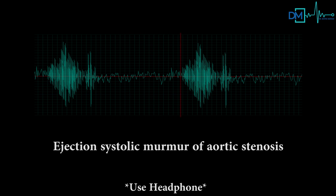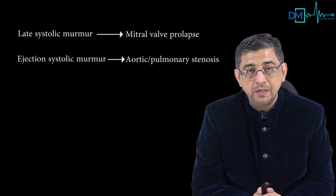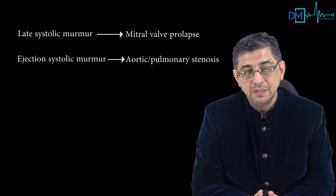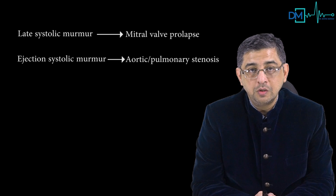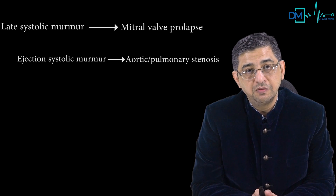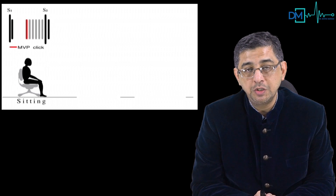Do not confuse the late systolic murmur of MVP with ejection systolic murmur, which is a crescendo-decrescendo murmur heard in valvular aortic stenosis. To summarize: late systolic murmur is a feature of mitral valve prolapse, while ejection systolic murmur is a feature of aortic and pulmonic stenosis.